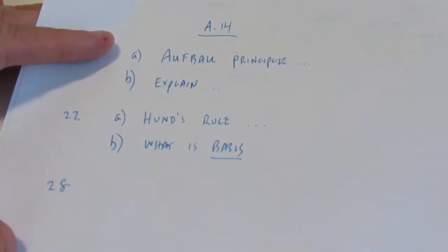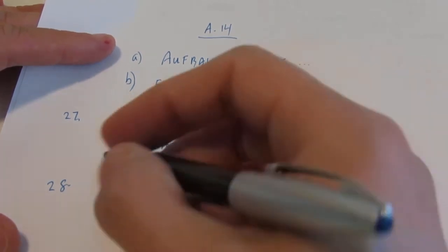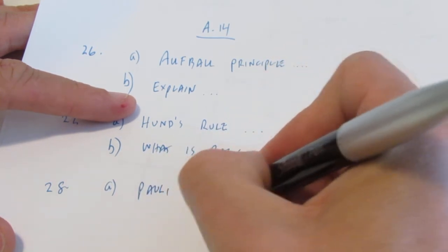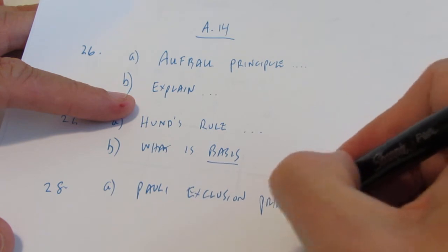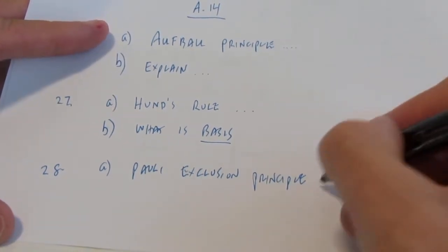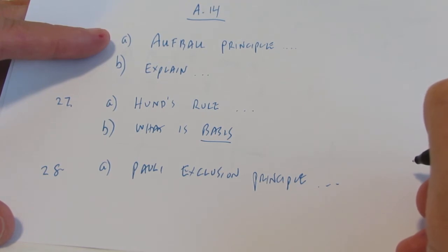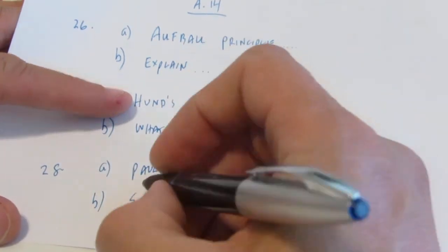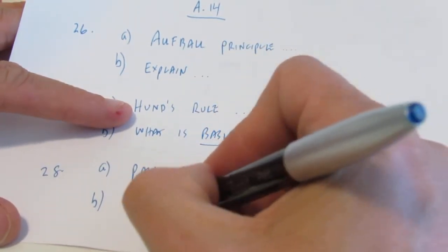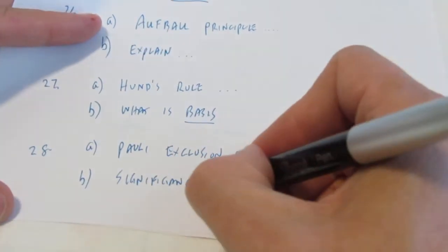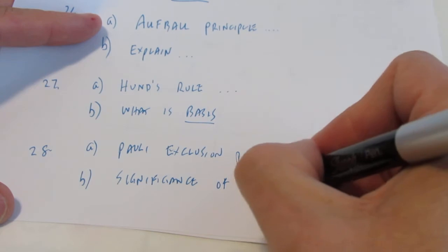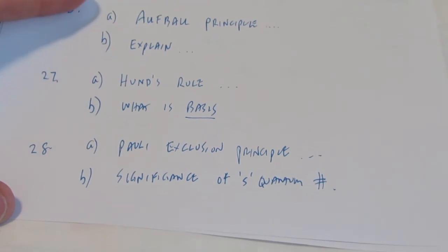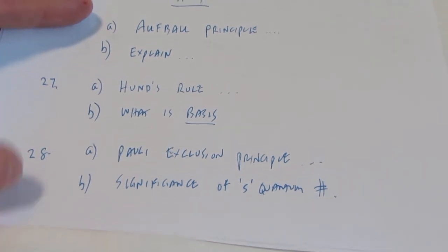And we'll hop on to number twenty-eight. And twenty-eight is, in your own words, state the Pauli Exclusion Principle. So a lot of vocabulary to start Assignment fourteen. Okay? I want you to look that one up on your own. And then the second part of that question says, what is the significance of the spin quantum number? And that's the S quantum number. Okay? So take a minute, and you should be okay with number twenty-eight. I'm not too worried about those first questions.